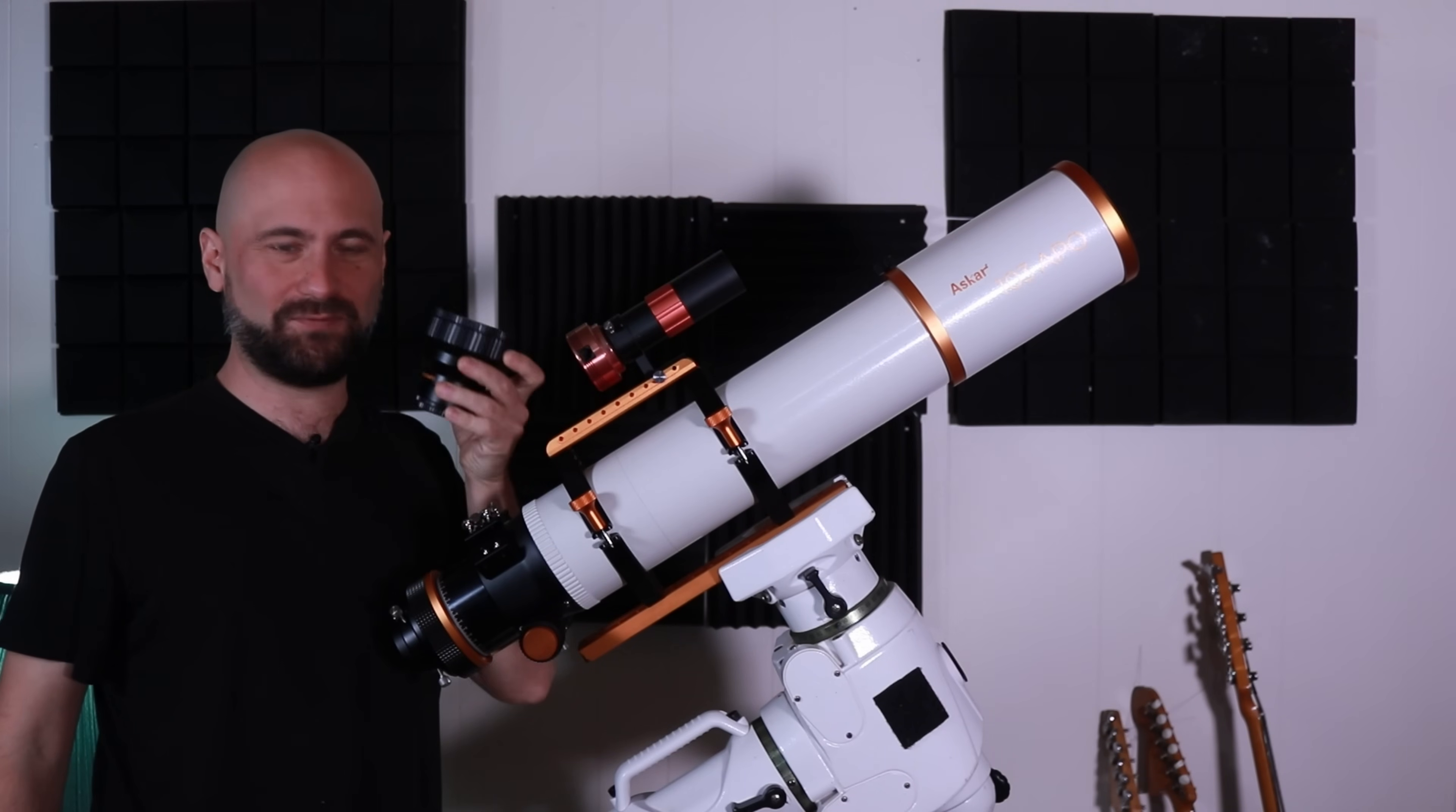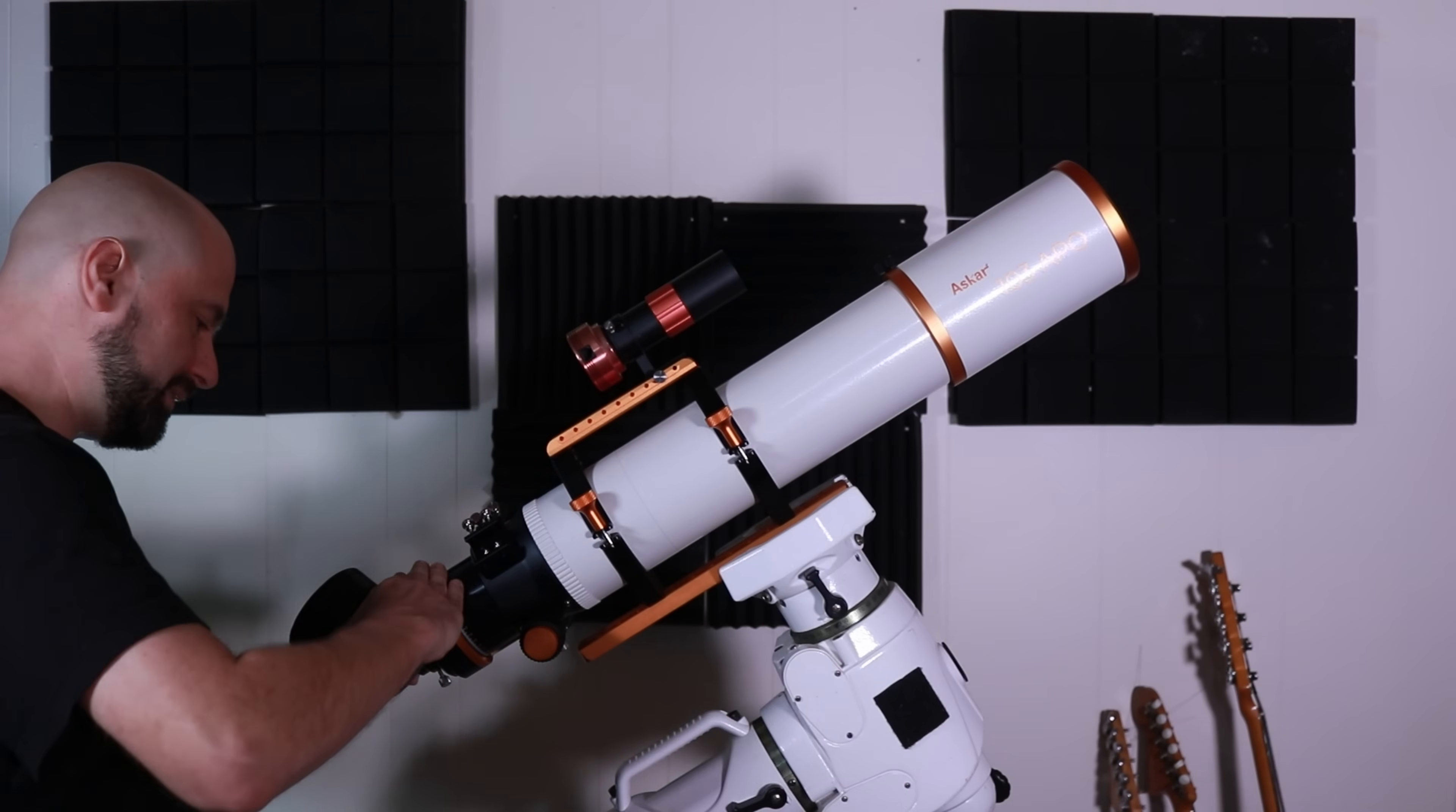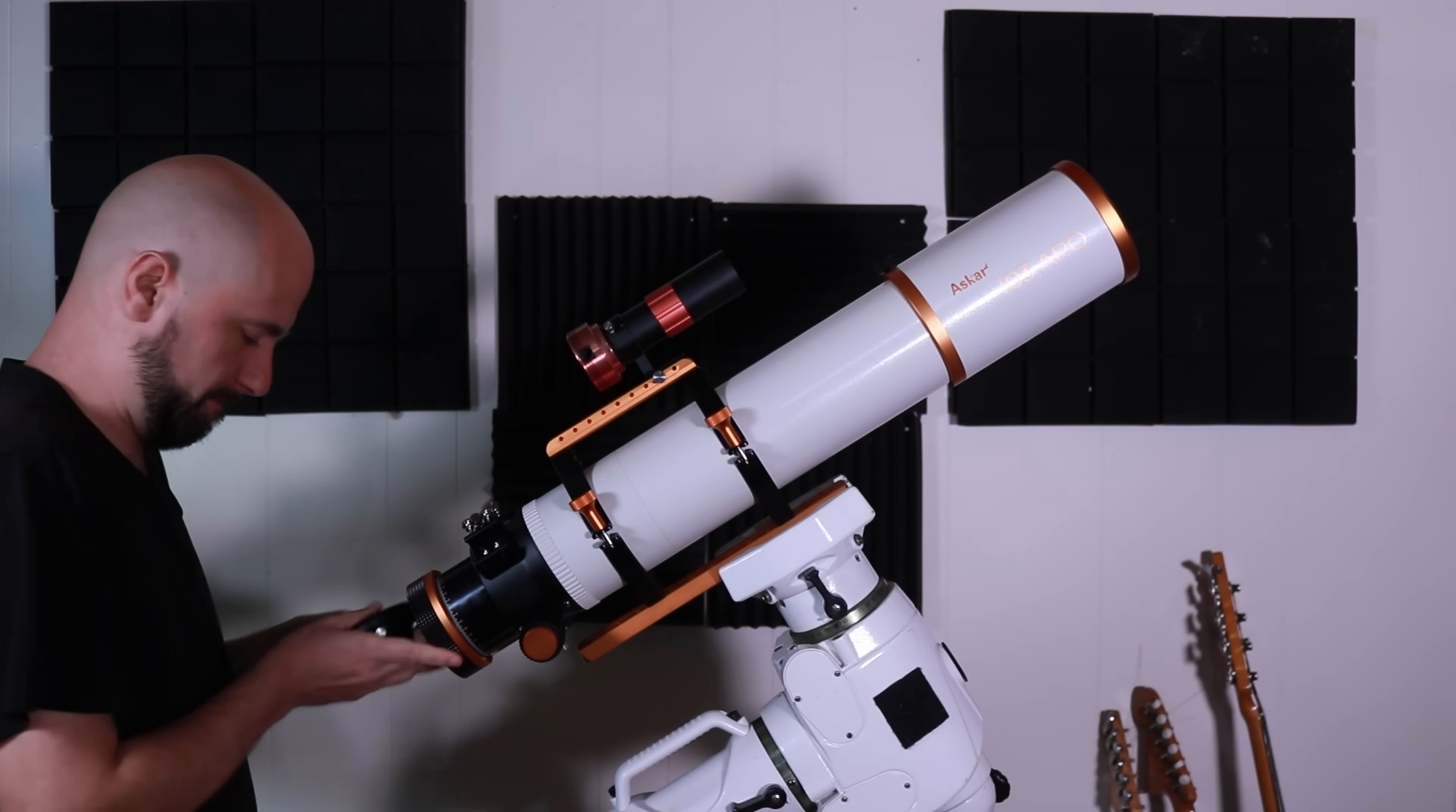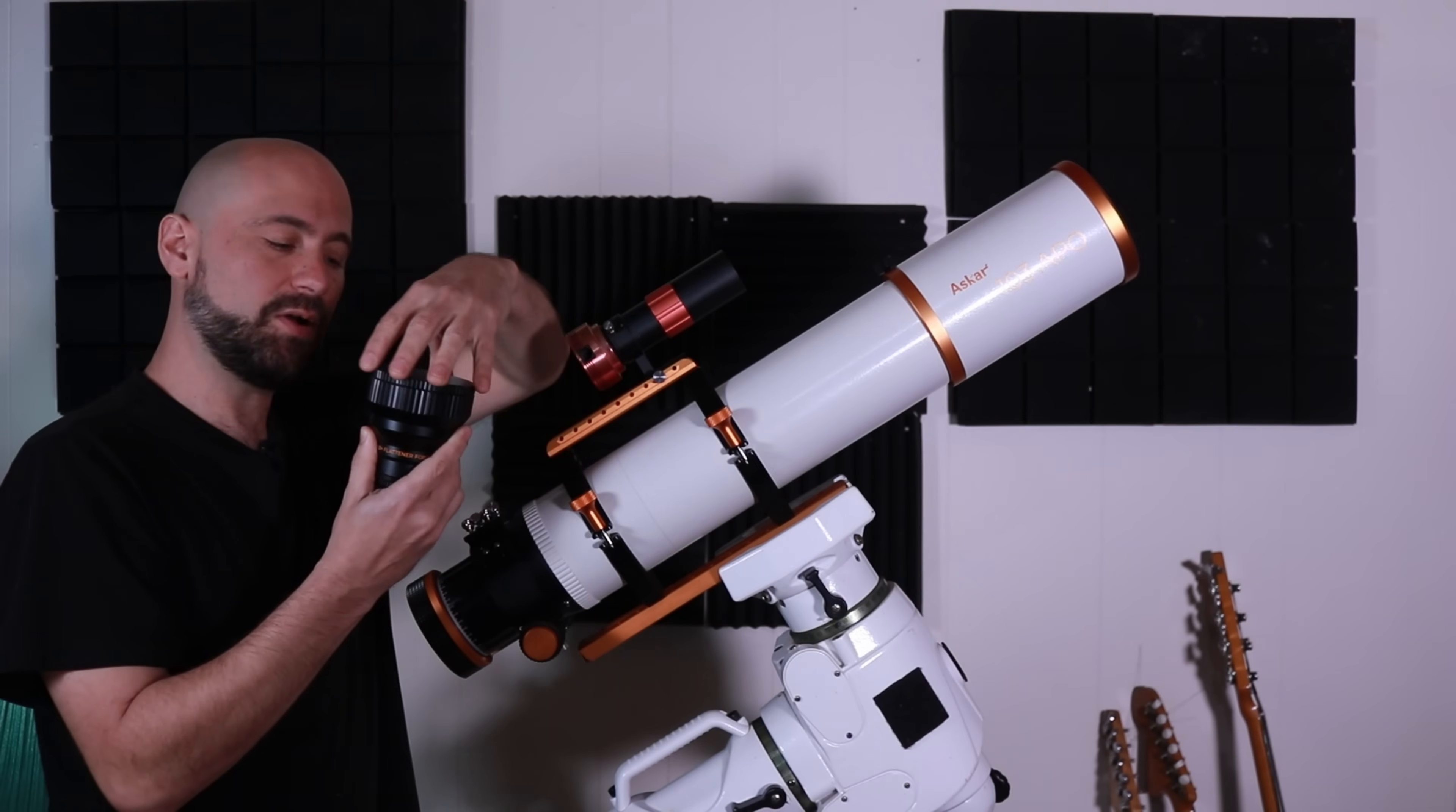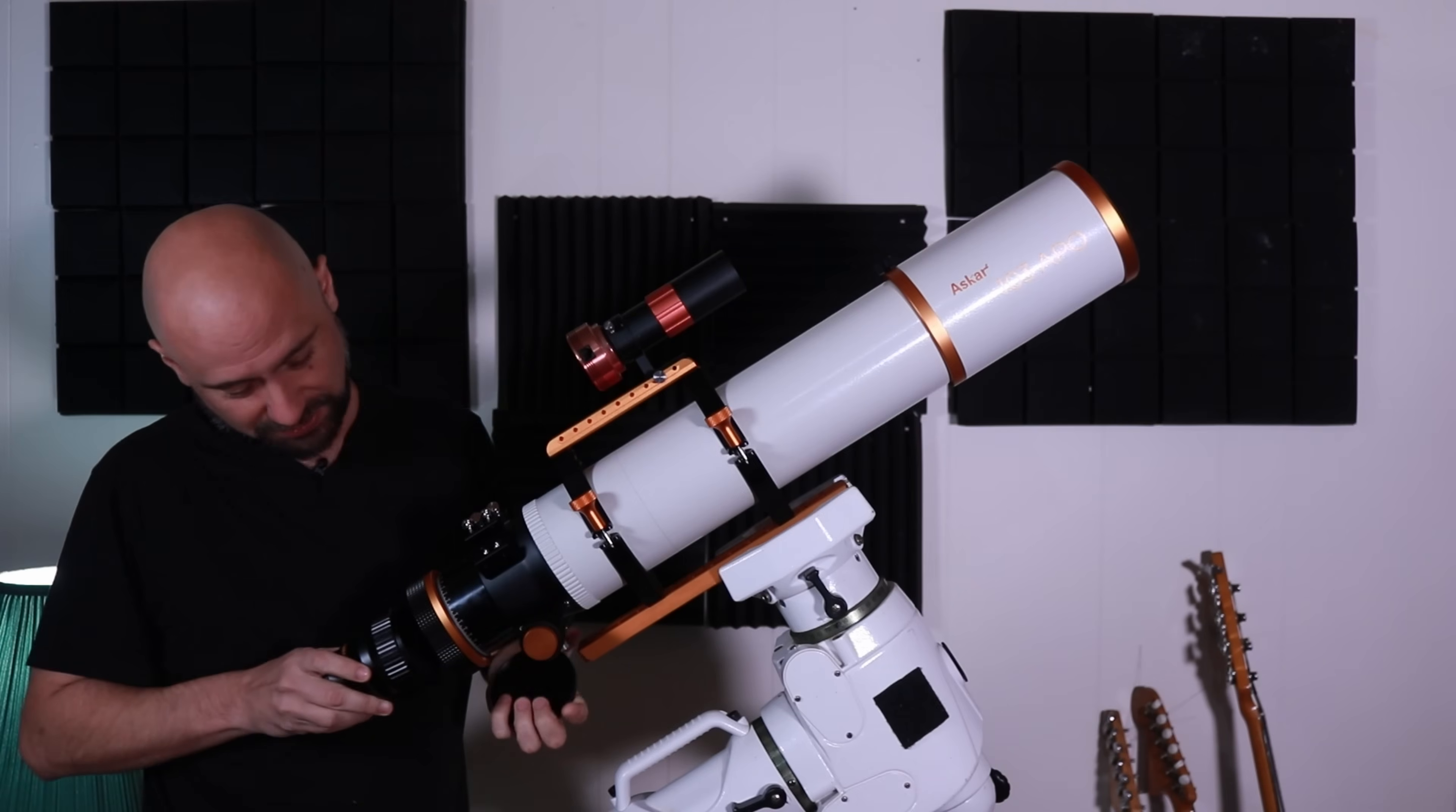And here it is, the 1x flattener. So if we want to put this on, we'll just unscrew the visual back, take the top cap off the flattener, and thread it right onto the back of the telescope.